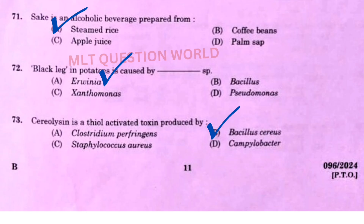Next one: Sake is an alcoholic beverage prepared from — the right answer is option A, steamed rice. Next one: Black leg in potatoes is caused by dash species — the right answer is option A, Erwinia.